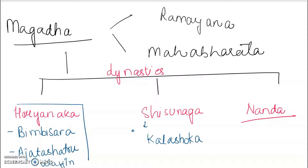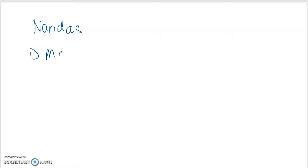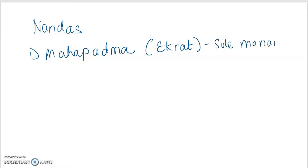Now I am going to talk of Nandas. After Shishunagas, we have got the Nandas. The first important Nanda is Mahapadmananda. He is the founder of the Nanda dynasty. He is also known as Ekarat, the sole monarch. In fact, you will be surprised to know he is identified as the first empire builder in Indian history. All this information is not given in your book — it's just to give you an idea so you don't get confused.